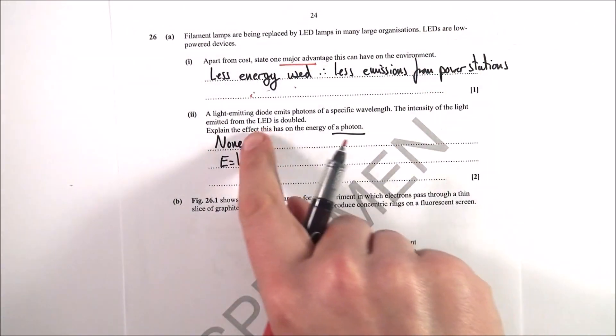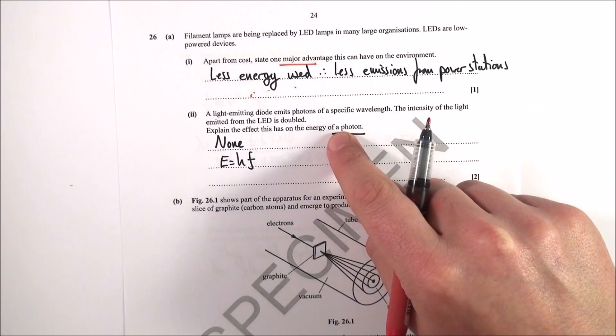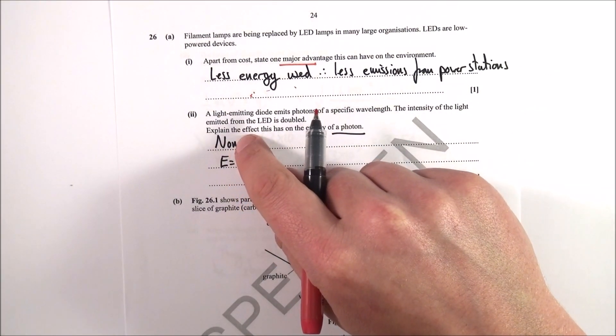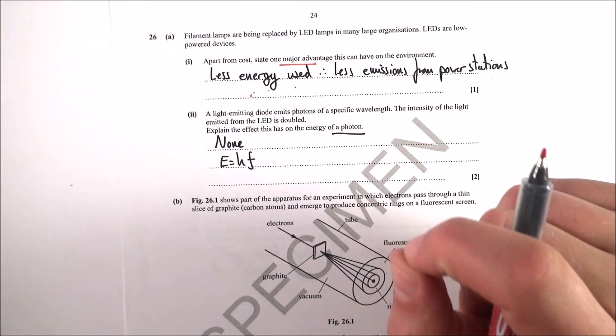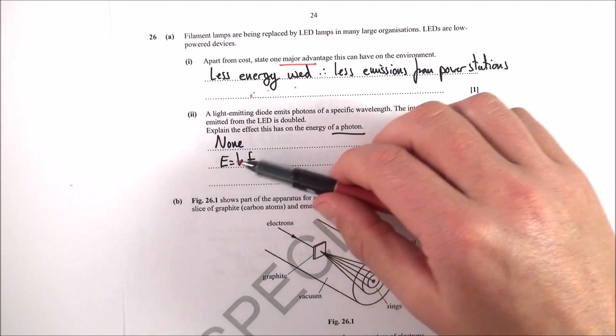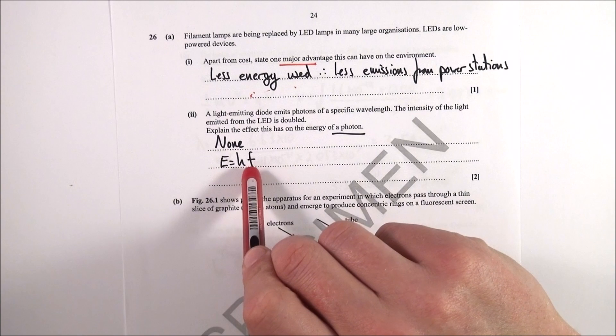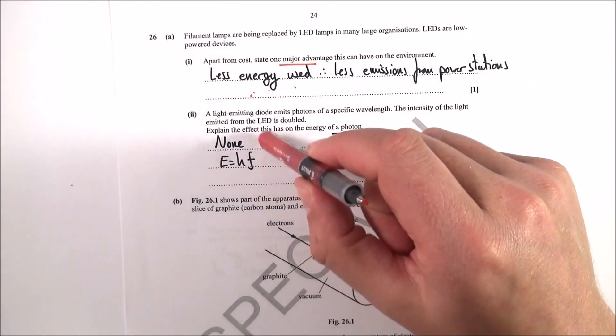Next one: explain the effect of the intensity of light on the energy of a photon. Well, this has no effect. There might be fewer photons landing, but each photon that lands still has the same energy. You might relate this to E=hf, where the energy of the photon depends on the frequency, not on the intensity of that light. This is where you put these concepts into words.